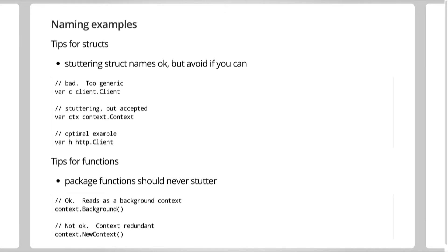As for functions, stuttering is generally not allowed in any case. For example, a function called new context in the context package repeats the word context — that's stuttering. Context.background is generally okay — if the package weren't part of the function's name, seeing a function just called background would be confusing. But because the package name is part of the function name, it gives you context about what kind of background it is. The general advice is to think of both names together.